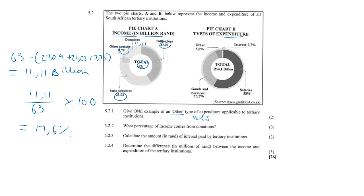Let's change color. 5.2.3, calculate the amount in rands of interest paid by tertiary institutions. So the interest in rands, well, the total is 54.1 billion here if we look at our expenses. So that's going to be 54.1 billion times that 0.7%. So 54.1 times 0.7 is actually equal to 0.3787 billion.